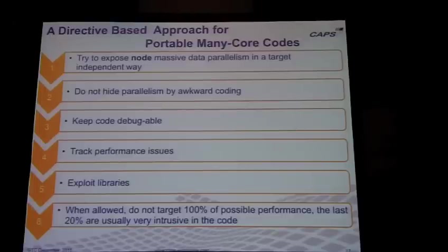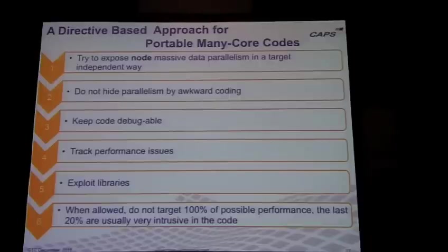The last rule is: usually you save a lot by not going after the last drop of performance. If you can stick to 80% of the potential performance of the machine, you keep your code much simpler.